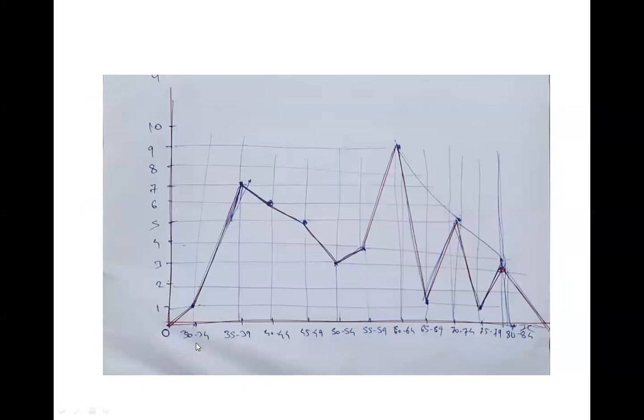For the frequency polygon, you plot points for each class interval and then join the points. You will start from zero, join all the points, and that will be your frequency polygon. You will end by coming back to zero.